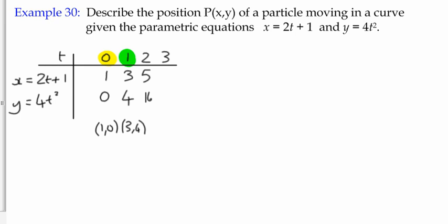And so on. When t is 2, we've got 5 and then 16. When t is 3, our function becomes x equals 7 and y equals 4 times 9 which is 36.